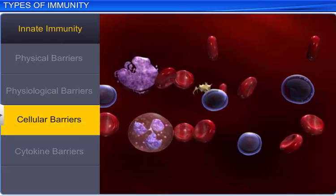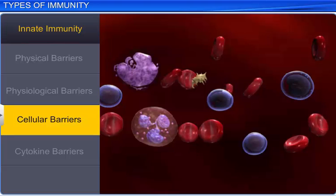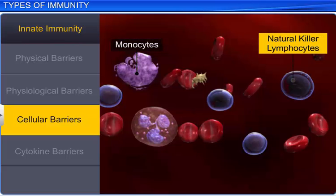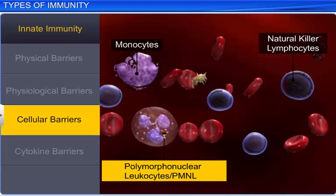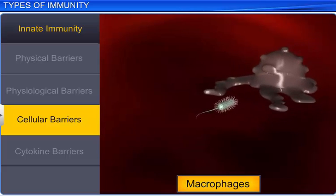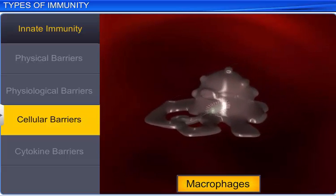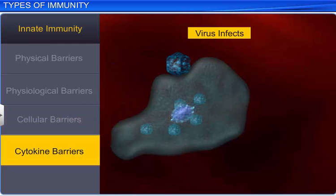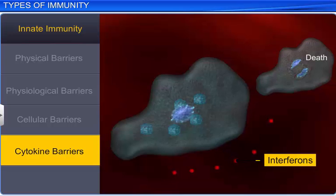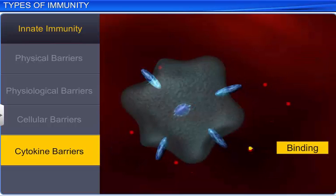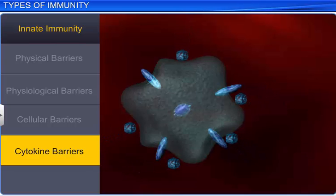Our body also has certain types of leukocytes, or white blood cells (WBCs), such as monocytes, natural killer lymphocytes, and polymorphonuclear leukocytes, also known as PMNL neutrophils, in the blood. Together, they constitute a cellular barrier, along with macrophages in the tissues. They can also destroy microbes. Some virus-infected cells release proteins called interferons, that prevent the spread of infection in the body, thereby acting as cytokine barriers in the body.